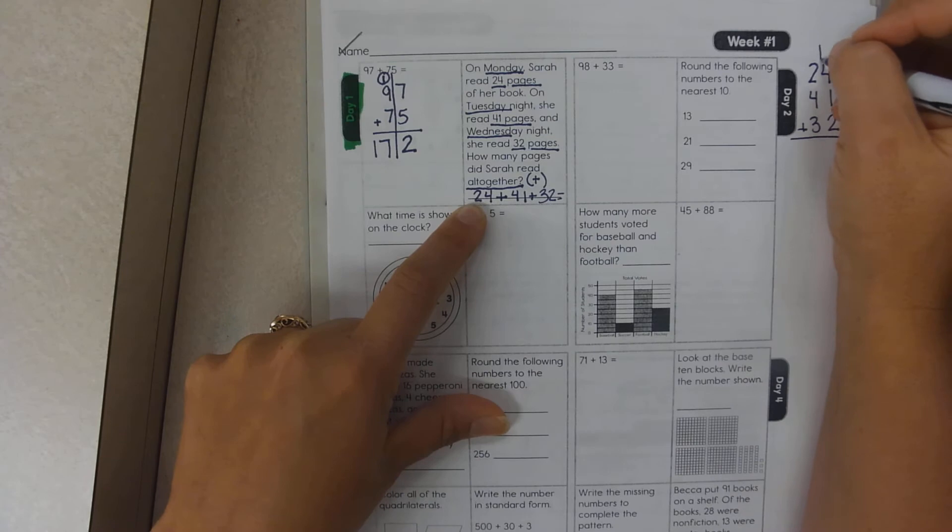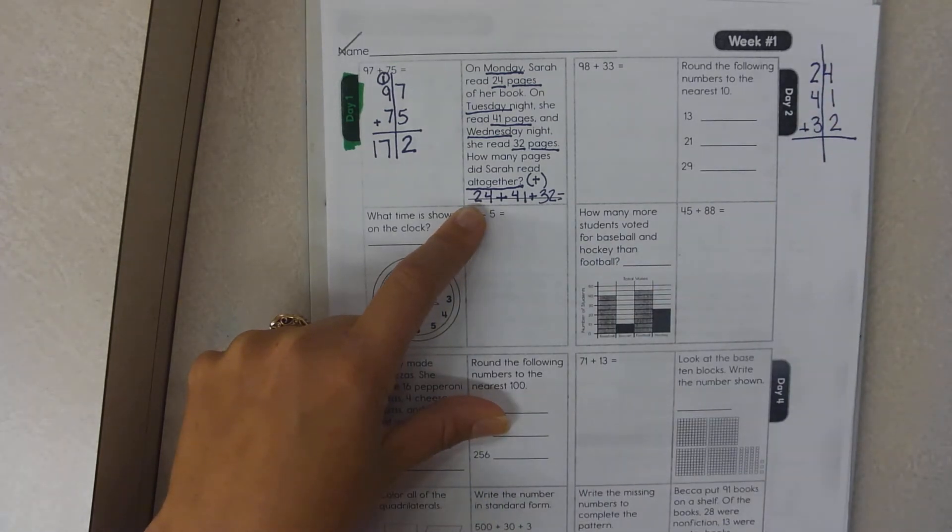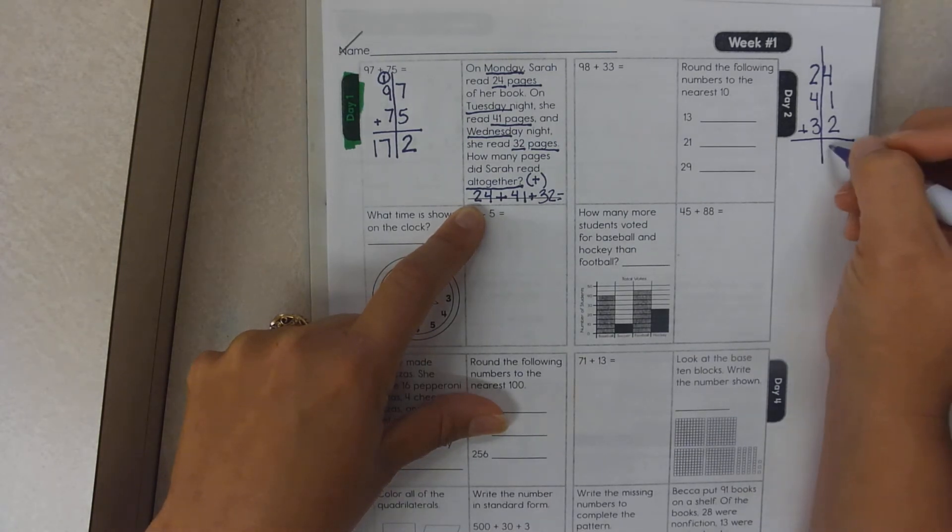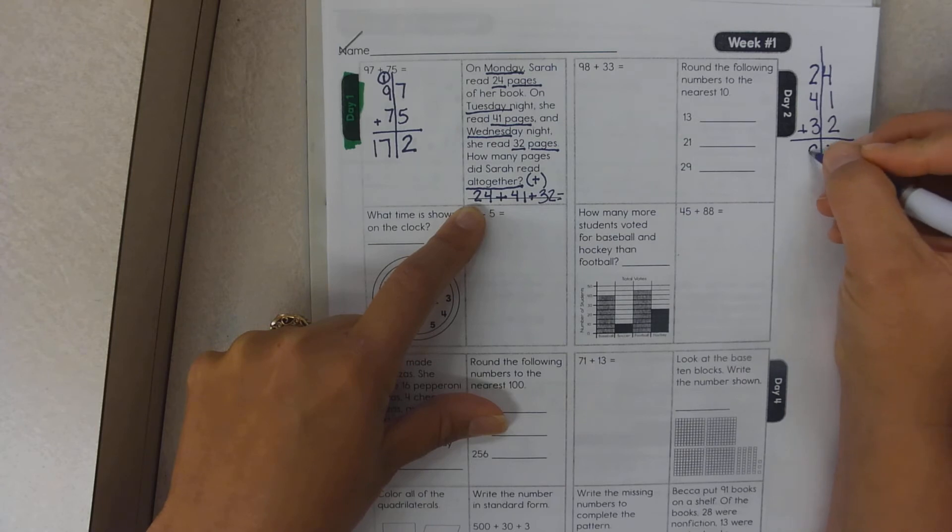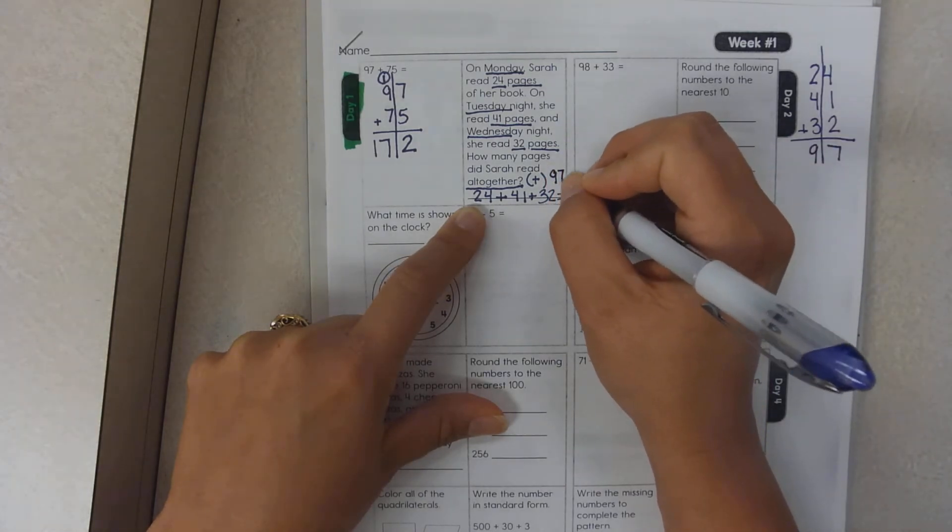I separate my ones and my tens. Eventually you will not have to do that, but for now please practice it. 4 plus 1 is 5. 5 plus 2 is 7. 2 plus 4 is 6. 6 plus 3 is 9. So my sum is 97.